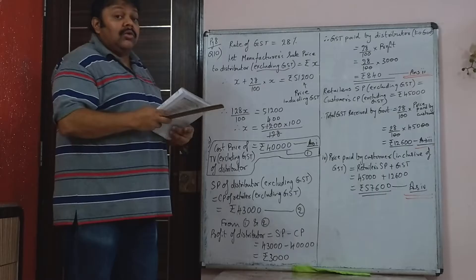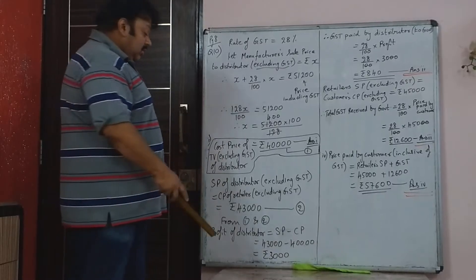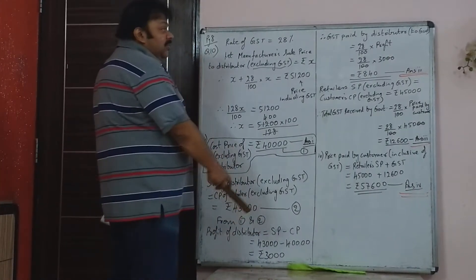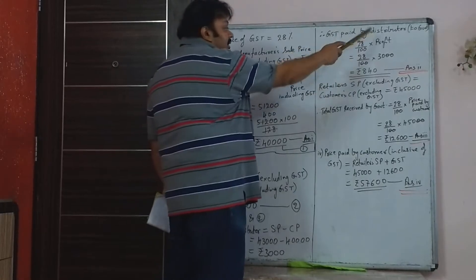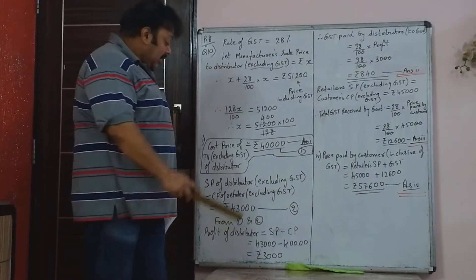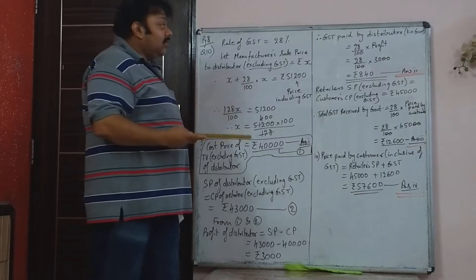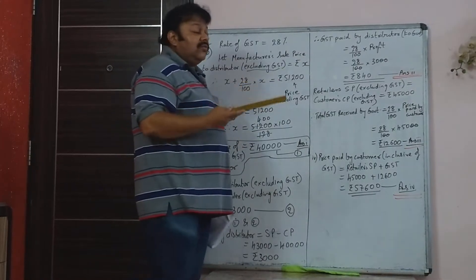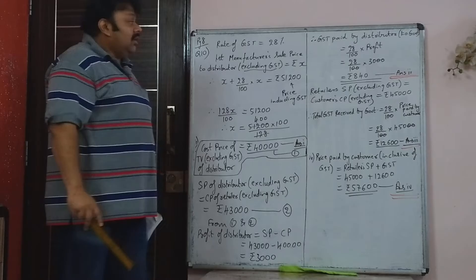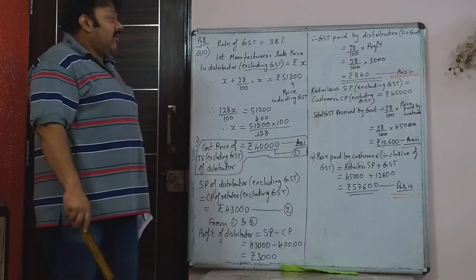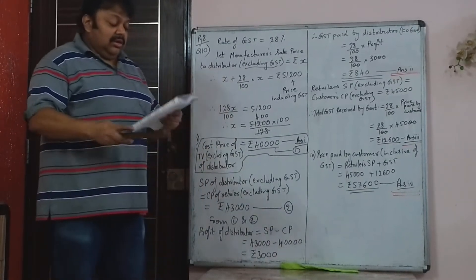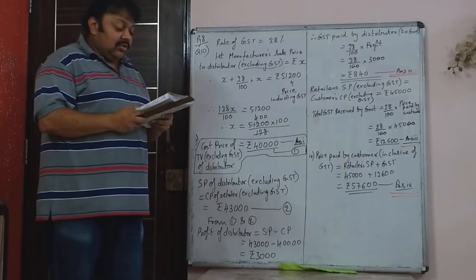The second thing asked is: GST paid by distributor to government. To find that, we found the profit. Now on this profit, 28% would be the GST paid by distributor to government. So 28% of Rs. 3,000 is Rs. 840. That is the second answer — the GST paid by distributor to the government.